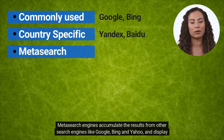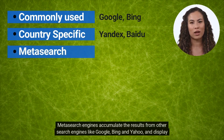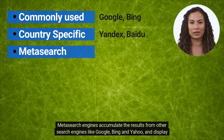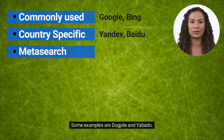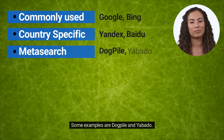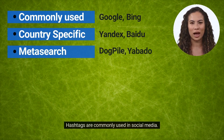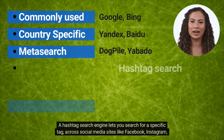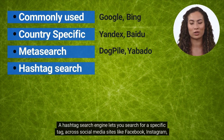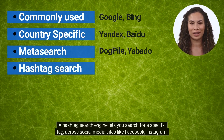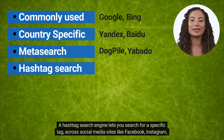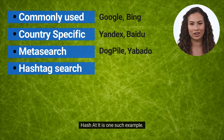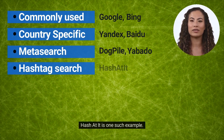Meta search engines accumulate the results from other search engines like Google, Bing, and Yahoo, and display them. Some examples are Pipl and Yabato. Hashtags are commonly used in social media. A hashtag search engine lets you search for a specific tag across social media sites like Facebook, Instagram, Twitter, and Pinterest. Hashatit is one such example.